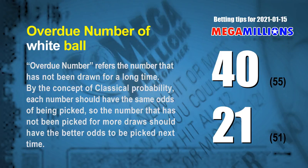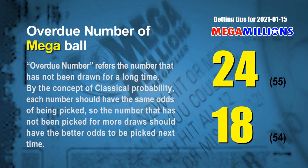The final tip is overdue numbers — a number that has not been drawn for a long time. By classical probability, a number not picked for more draws should have better odds next time. The two most overdue white balls are 40 and 21: white ball 40 has not been drawn for 55 draws, white ball 21 for 51 draws. The two most overdue Mega Balls are 24 and 18: Mega Ball 24 has not been drawn for 55 draws, Mega Ball 18 for 54 draws.